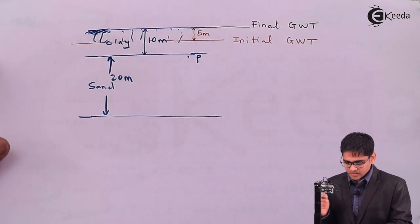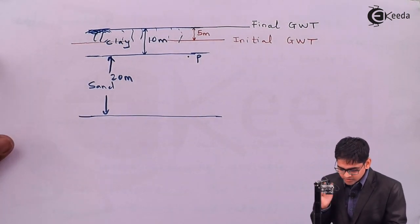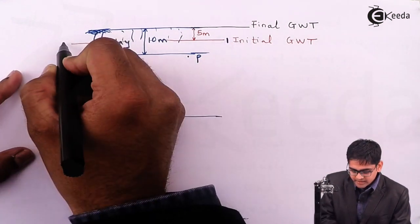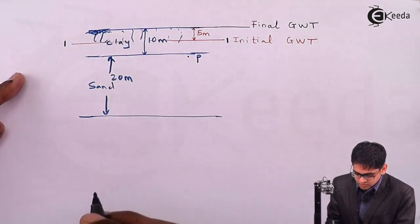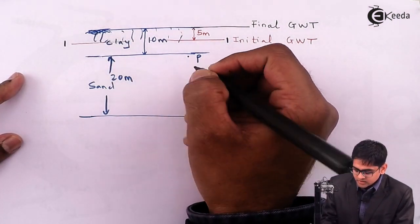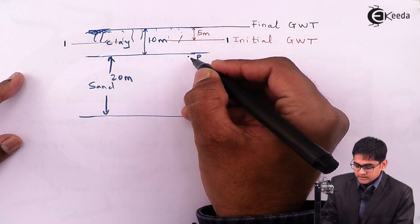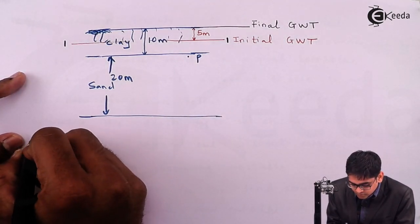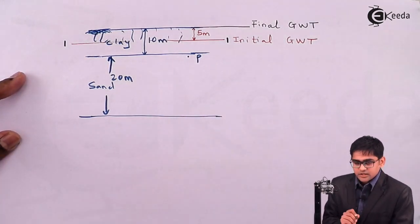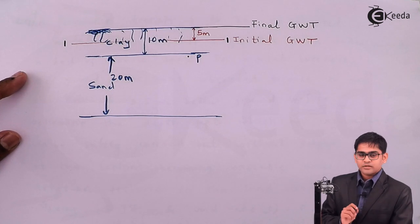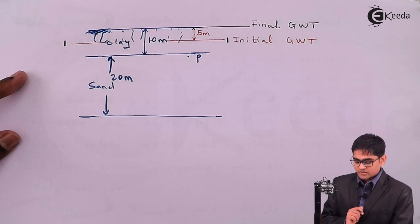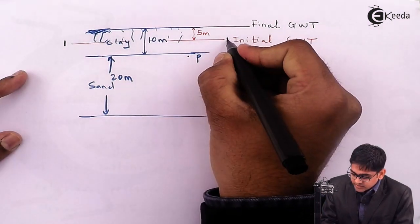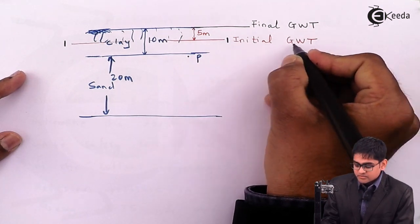Initially, the groundwater table is at location 1-1. We need to find the effective stress at point P, which is in the sand. To calculate effective stress, we first need to calculate total stress and pore water pressure. This is the initial groundwater table location.